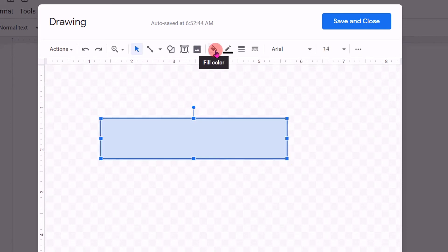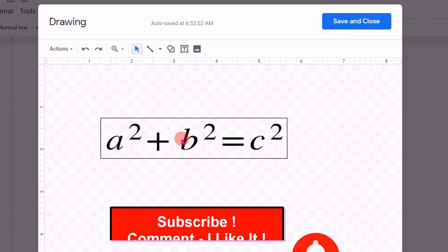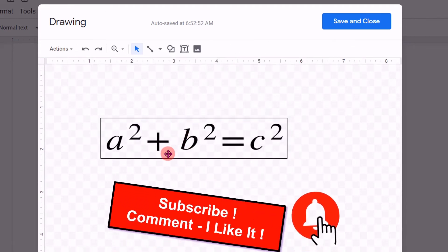Then click on fill color, select transparent and the border will be applied to the equation.